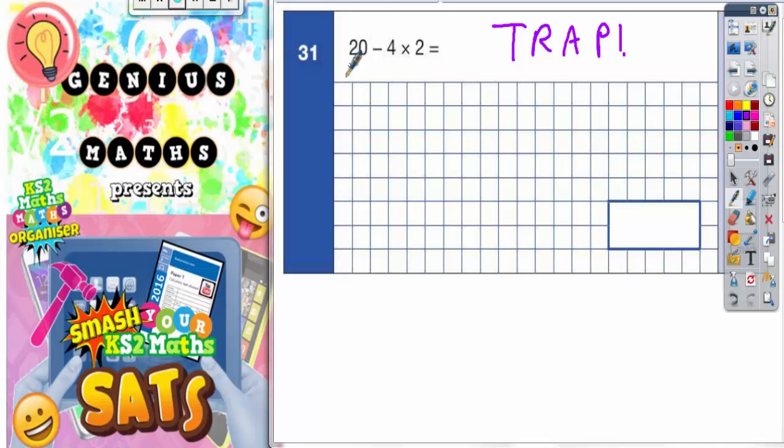If you just read it left to right, this is what you're going to get: you do 20 minus 4, which gives you 16, and then you do 16 times 2. If you double 16 you'll get 32, but this is absolutely wrong. We'll see in a minute why it's not 32.